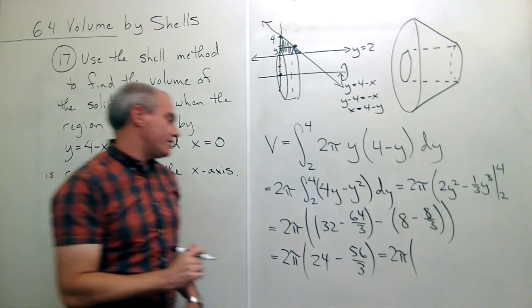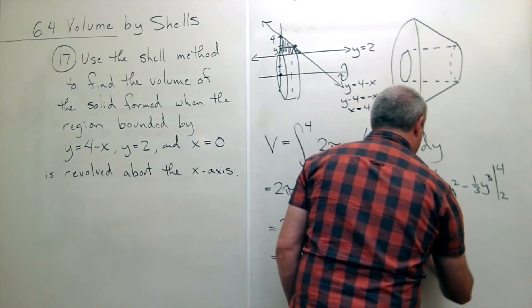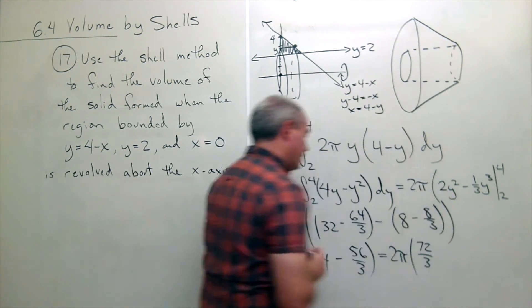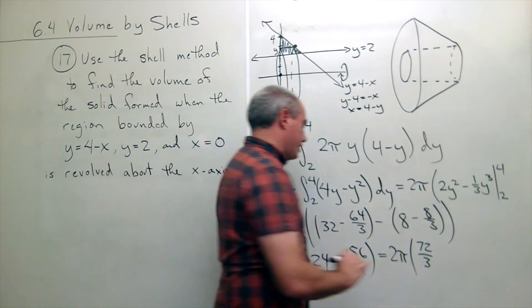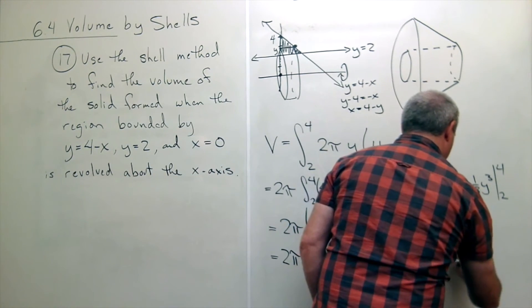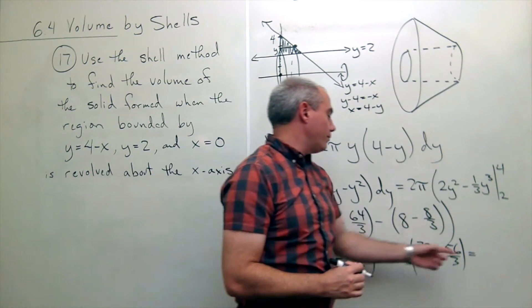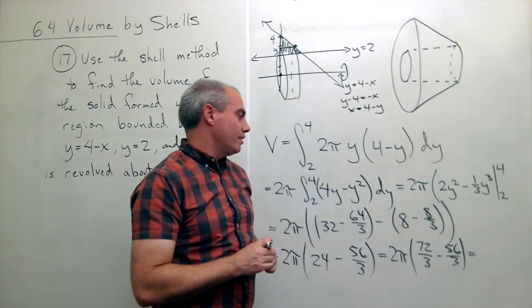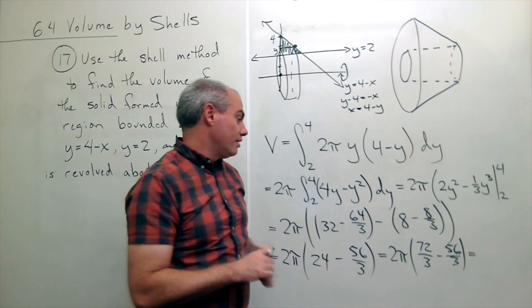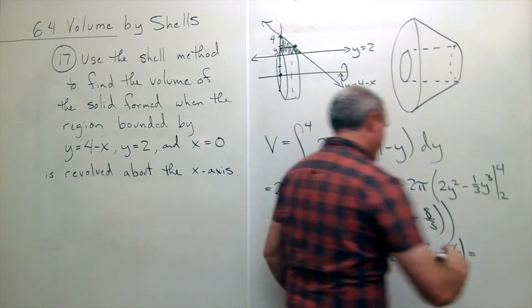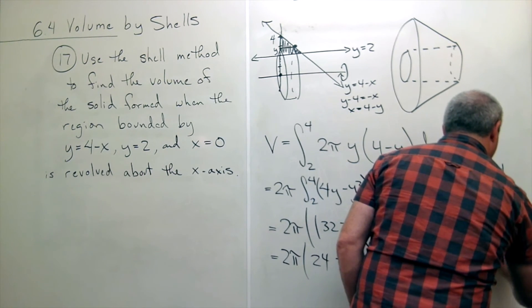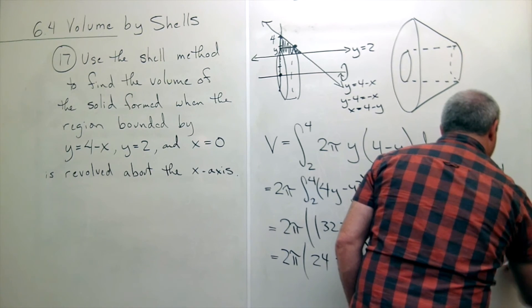And so let's see, what would that be? Seventy-two thirds minus fifty-six thirds. Which is seventy-two minus fifty-six is sixteen. Sixteen times two is thirty-two